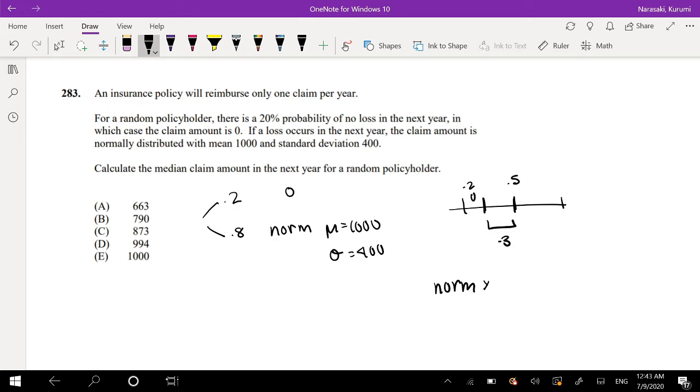So we want this normal distribution, we want to scale it to 0.8. We want to scale it to 80% of its original size. And we're looking for when it would be equal to 0.3. So then our normal distribution, we're looking for actually 0.3 divided by 0.8, which is equal to 0.375.